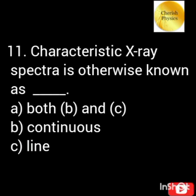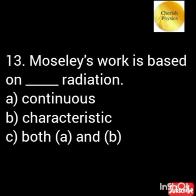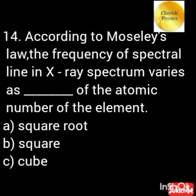Characteristic X-ray spectra is otherwise known as line spectra. Characteristic X-ray spectrum is due to the transition of electrons between inner shells of the atom. In characteristic X-ray spectra, the frequency of spectral lines in the X-ray spectrum varies as the square of the atomic number of the element.